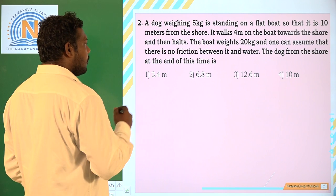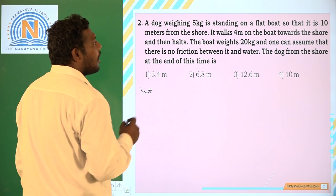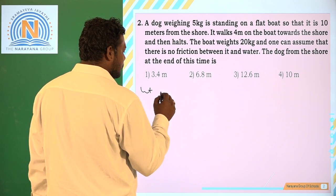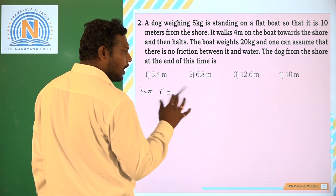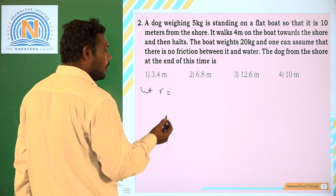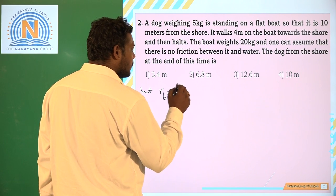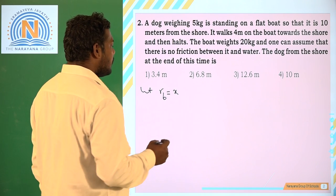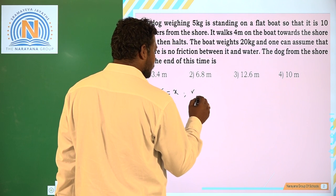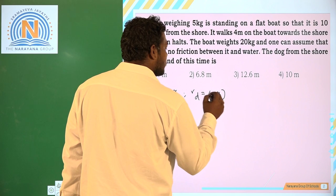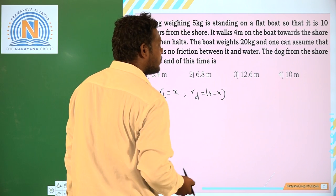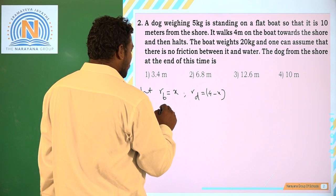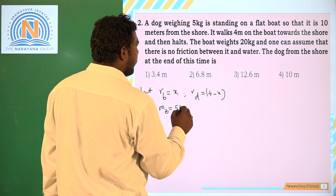The boat weighs 20 kg and one can assume that there is no friction between it and water. The dog from the shore at the end of this time. Now here let the boat with respect to earth, so the distance of boat relative to earth is x. Let us say the boat is moving x. Then the dog moves 4 - x.